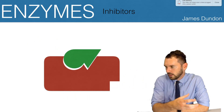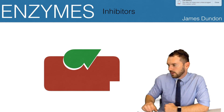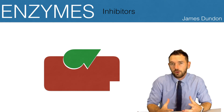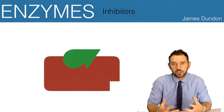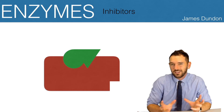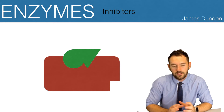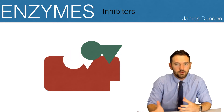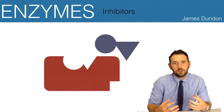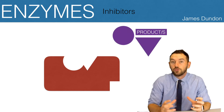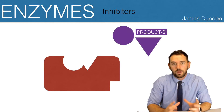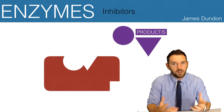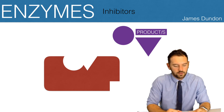We saw that the substrate can go into that active site. We have this induced fit model which means we get a conformational change to the active site to better fit that substrate, and then we produce products. It could work the other way — we could have two substrates make one product, or one substrate make multiple products.